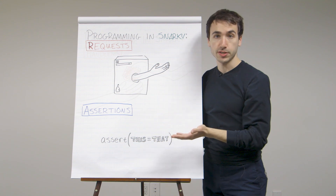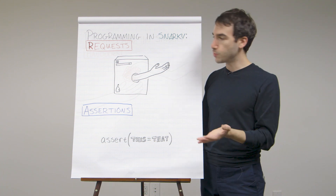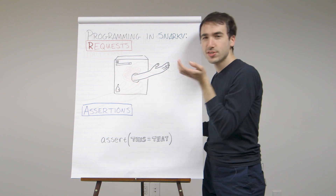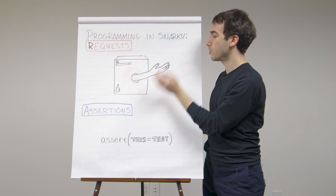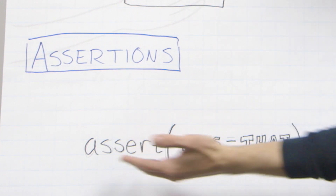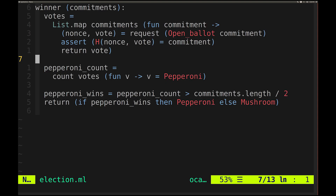Snarky is our OCaml DSL for writing high-level properties, and it compiles those into a constraint system to pass off to ZK-SNARK constructions. Programming in Snarky is like programming in OCaml, except you have two new primitives. The first is that your computation can make requests — it can pause and ask the world to fill in a value. The second is that your computations can make assertions — asserting that something holds of some data, for example that one thing is equal to another. You'll be able to produce a proof that says: I know values to answer all the requests with so that every assertion is true.